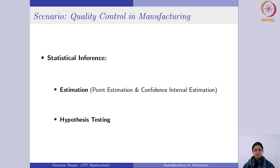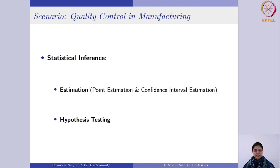Consider another example: suppose you want to know the average salary of residents in your city. If you proceed with point estimation, you take a sample and come up with a single value — say 35,000 — as the average salary. In confidence interval estimation, you would not pinpoint a single value but rather say the average salary is between, say, 32,000 and 37,000 or 38,000. Here you have provided a range of values — an interval within which the average salary might lie — rather than a single value as in point estimation.